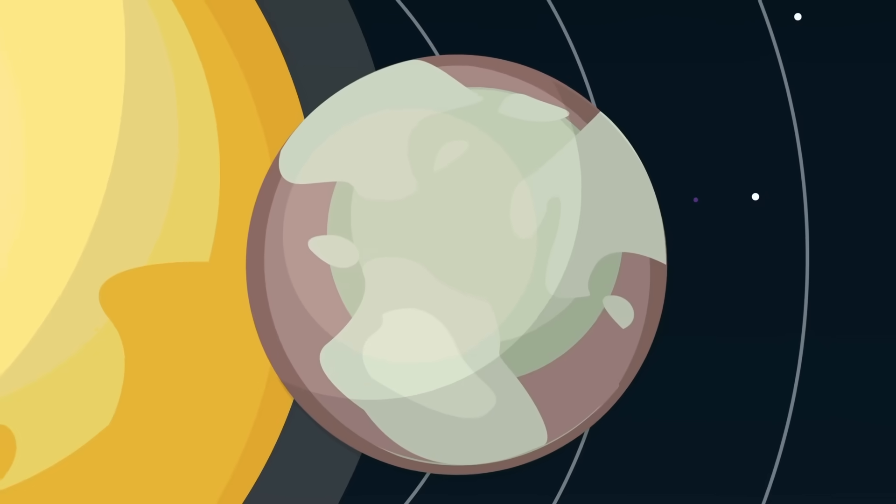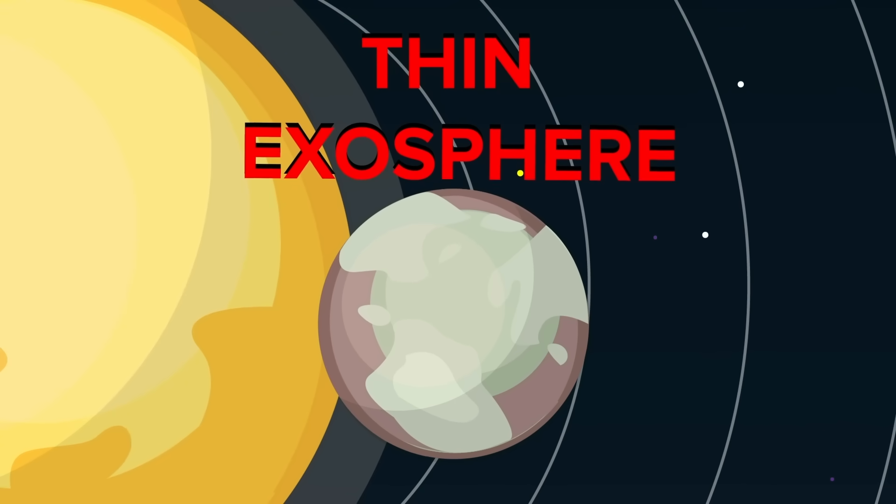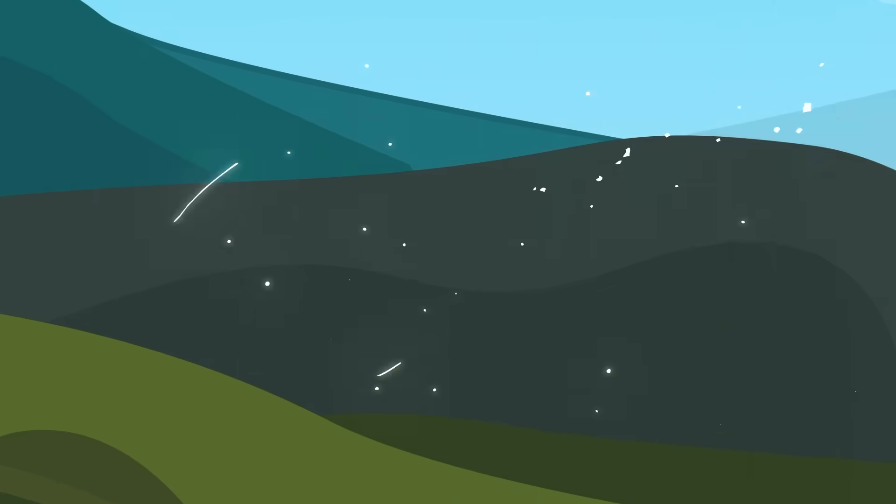But it was intensely hot and lacked an atmosphere, instead having only a thin exosphere. So if it had formed anywhere else, there is a possibility that it could have been a place for standing water and potentially life. But Mercury isn't the most intense place in the solar system.